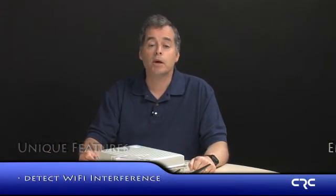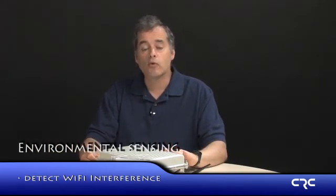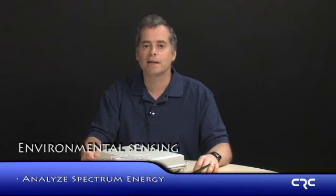The CORAL system has several unique features. Firstly, the hardware has the capability to do environmental sensing. The platform has capabilities to detect Wi-Fi interference and report it back to the network management station. It also has a spectrum analyzer card in the box to be able to sense the energy at different frequencies and report back that information to the network management station.